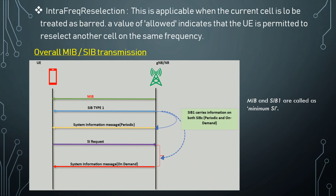We can see the overall MIB and SIB transmission mapping showing the flow between the UE and gNB. The MIB is transmitted from gNB to UE, and SIB type 1 is transmitted in both periodic and on-demand cases — we can see the SI request and system information message for the on-demand case. The MIB and SIB1 are called the minimum SI.